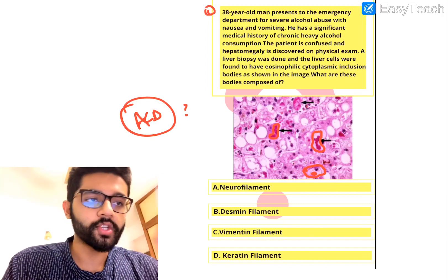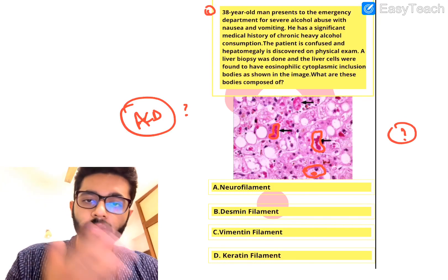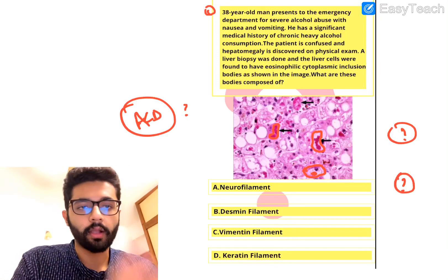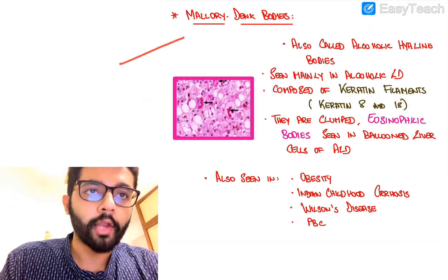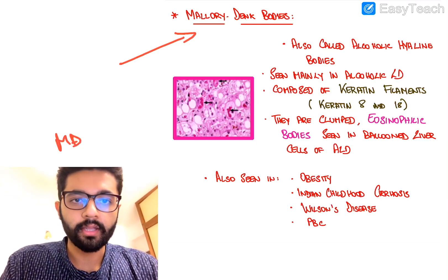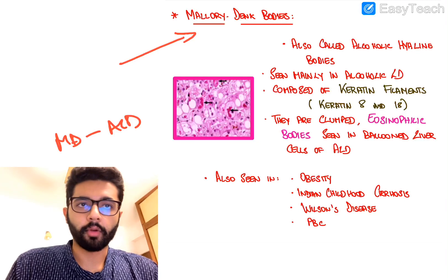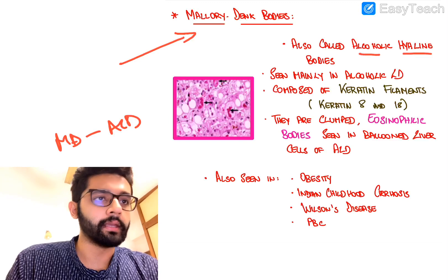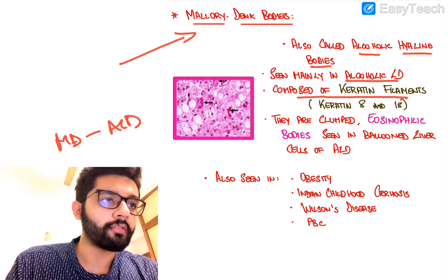To answer that question you need to know two things: what are these pathological bodies seen in alcoholic liver disease called, and what are they composed of? In alcoholic liver disease you see something called Mallory bodies or Mallory-Denk bodies. Mallory-Denk bodies are pathognomonic for alcoholic liver disease. They are also called alcoholic hyaline bodies.